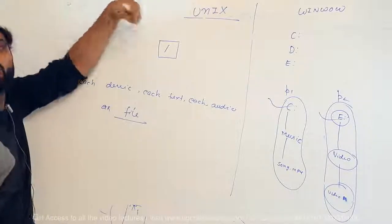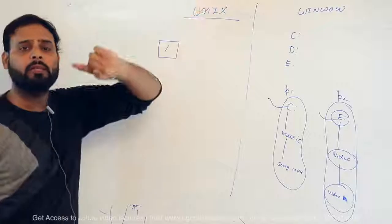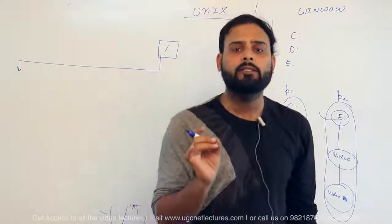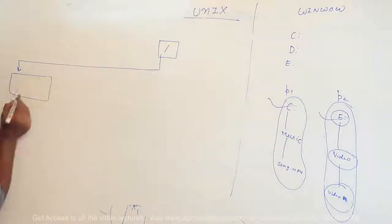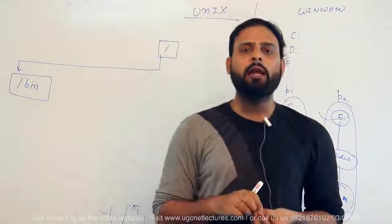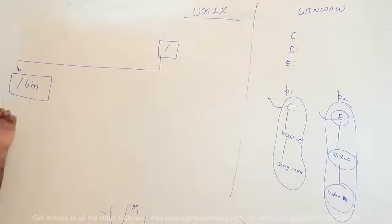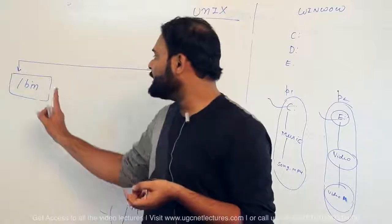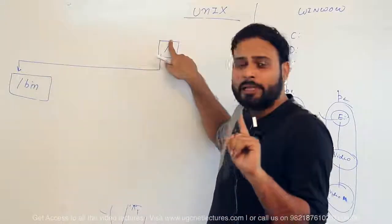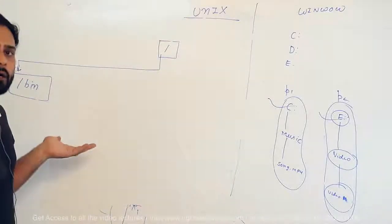In UNIX, root is the parent of the file tree — you start everything from root. After root, there are many directories available. The first famous directory in Linux configuration is /bin. The forward slash denotes root, so /bin means starting from root. What is bin? Bin stands for binary — it contains all command-related and executable information. The operating system searches executable information from the /bin folder.